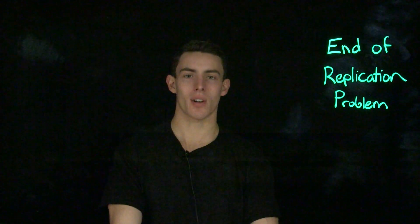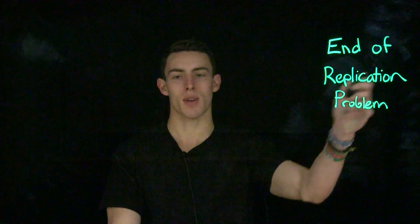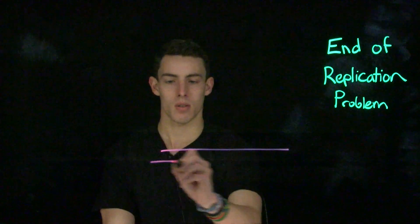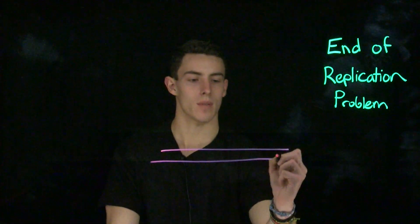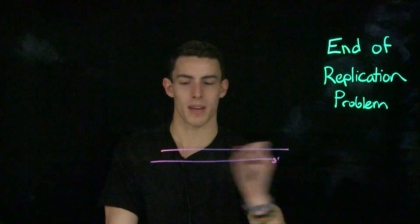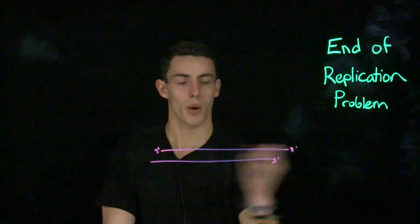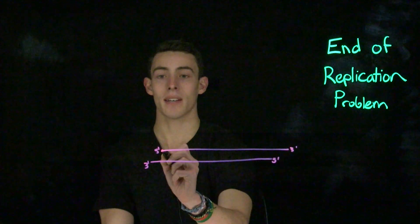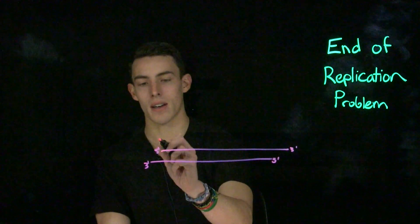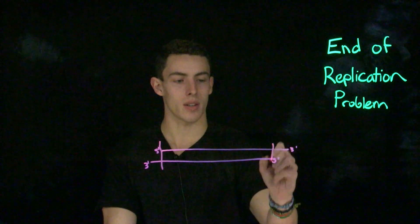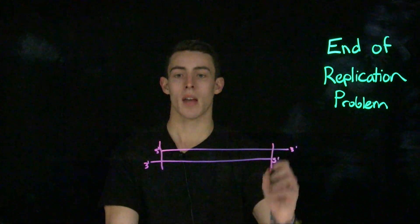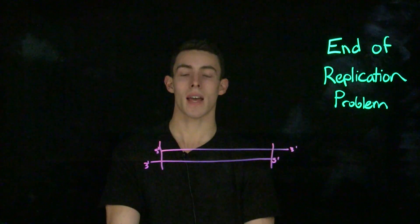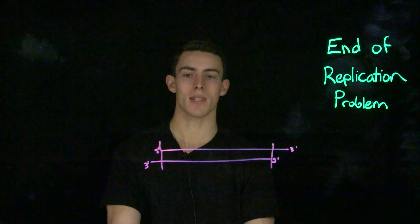Unlike the replication of circular DNA, lagging strand synthesis on linear DNA causes a distinct set of issues known as the end of replication problem. The lagging strand of DNA with a 5' end poses a distinct issue at the ends of the chromosomes because it lacks a free 3' hydroxyl group, and thus with every round of replication part of the chromosome will be lost. This poses an issue for cells that undergo a lot of replication, and thus cells need a mechanism to deal with this.